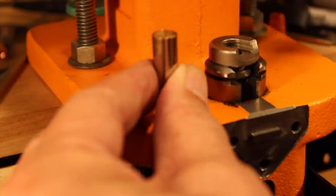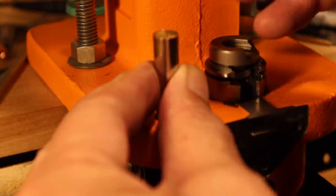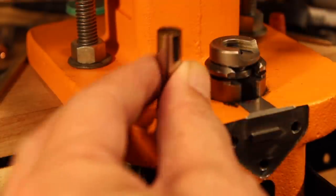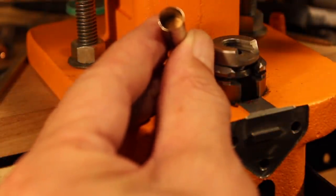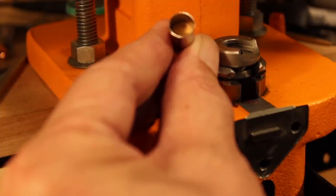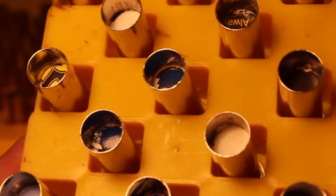Now we take one of our wads. Put it in. And then we take a 327 federal case. Or you could use a 30 carbine case. And just press that right down until you have the wad over the powder. So there you see all the wads are placed nicely.